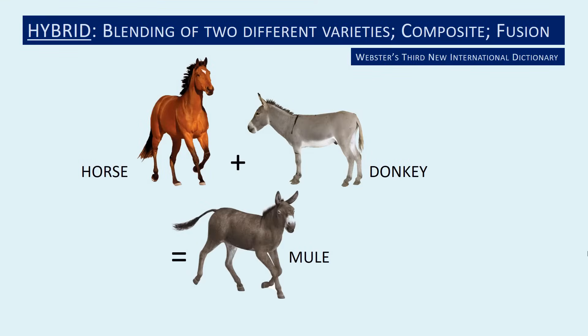Let's take a look at the word hybrid. It is a blending of two varieties. If you get a horse and donkey together you get a mule, a blending or hybrid of a horse and a donkey.